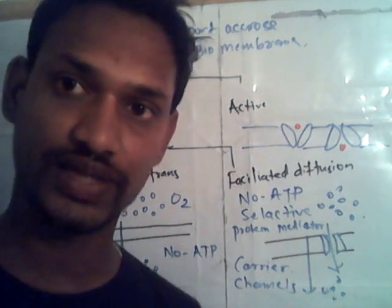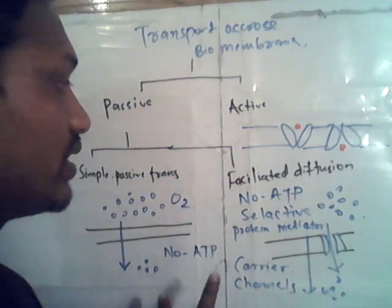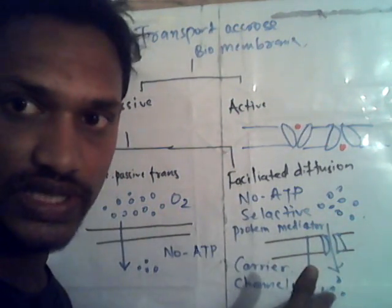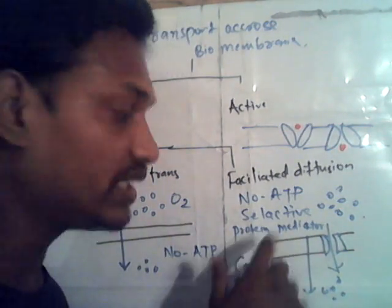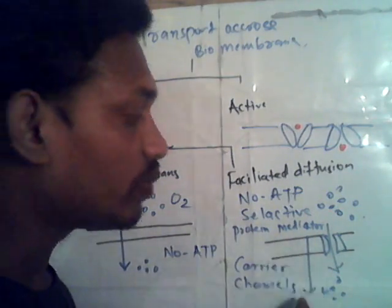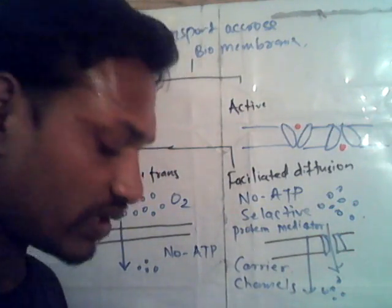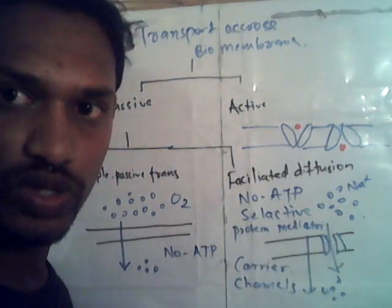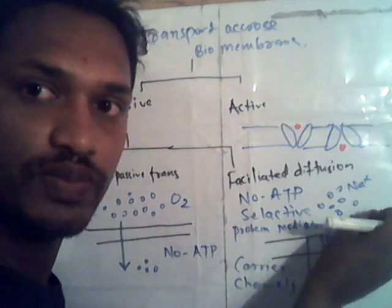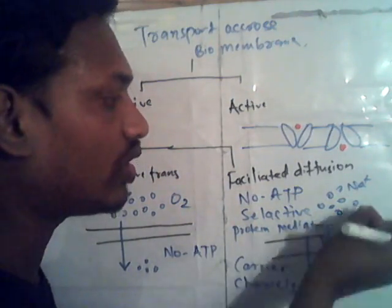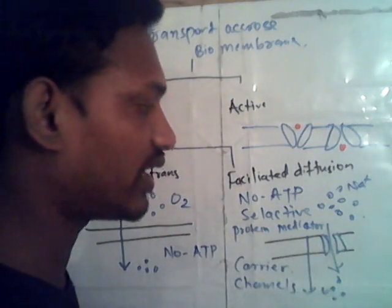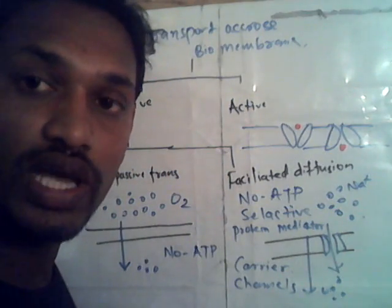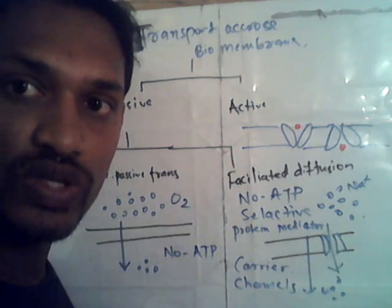This occurs inside facilitated diffusion. What is the difference between simple and facilitated diffusion? In both cases energy is not required. But in facilitated diffusion, the process is protein-mediated and it is selective, whereas simple diffusion is non-selective. When some ions contain a charge — for example, sodium — and they move along the concentration gradient, this is called an electrochemical concentration gradient.